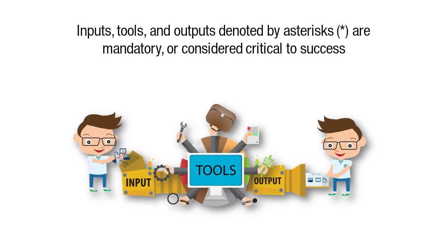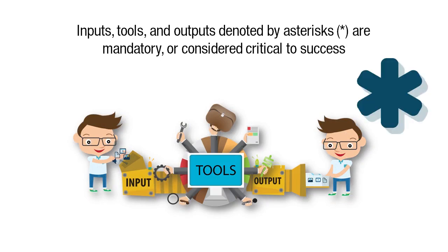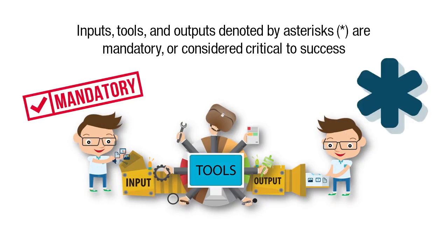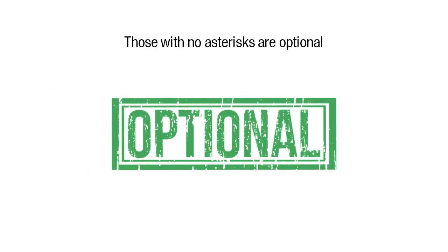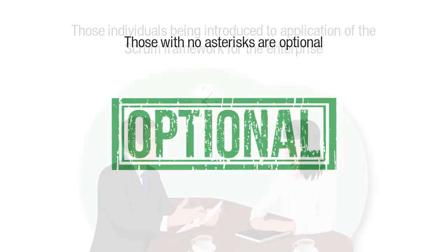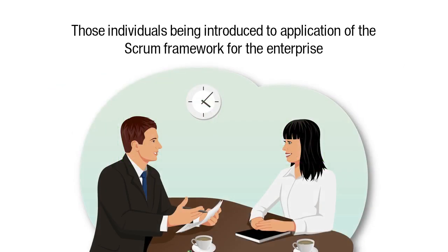Inputs, tools, and outputs denoted by asterisks are mandatory or considered critical for project success, whereas those with no asterisks are optional.